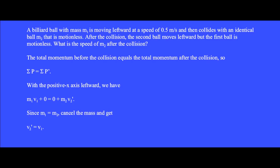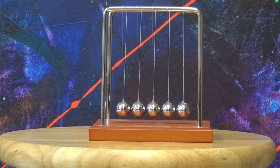A billiard ball with mass m1 is moving leftward at 0.5 meters per second and collides with an identical billiard ball m2 that is motionless. After the collision, the second ball moves leftward but the first ball is motionless. With the positive x axis leftward, we have m1v1 plus 0 equals 0 plus m2v2-prime. Since m1 equals m2, we cancel the mass and get v2-prime equals v1. This exchange of momentum can be seen in Newton's Cradle.